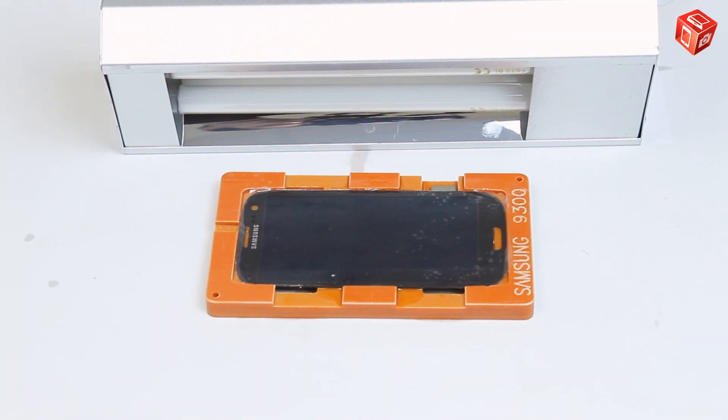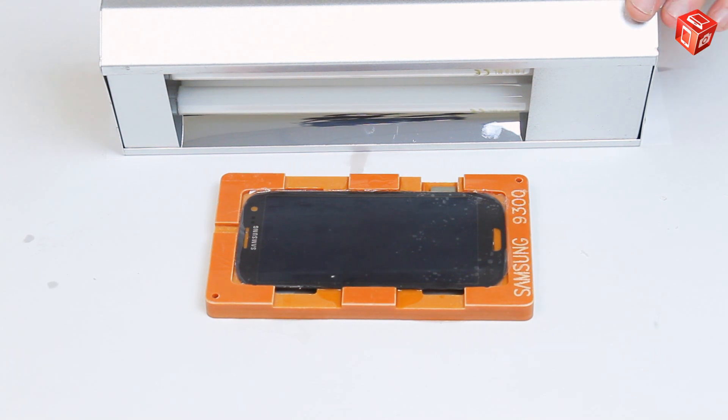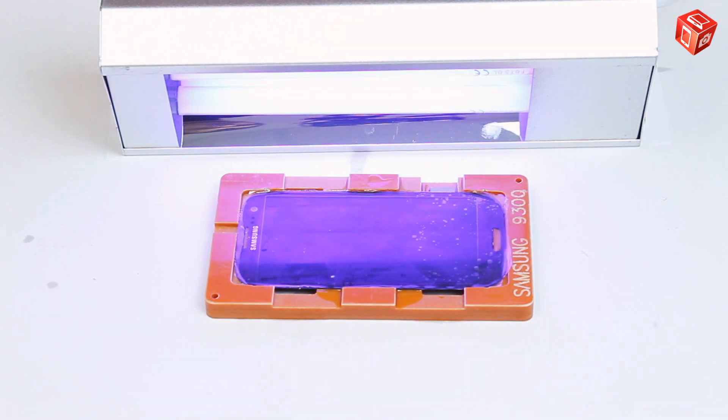Put the module under the ultraviolet lamp for about 10 to 30 minutes depending on the lamp power.